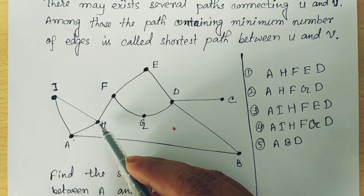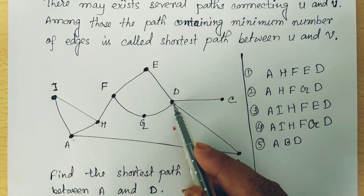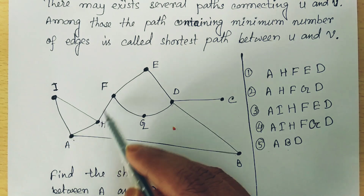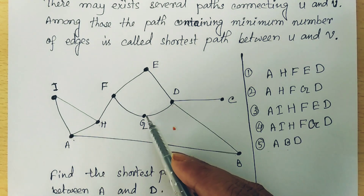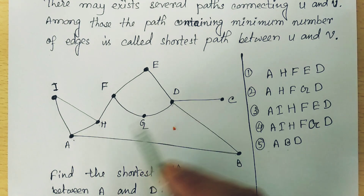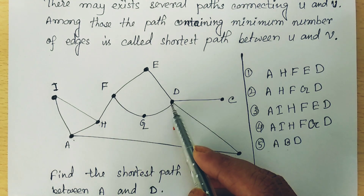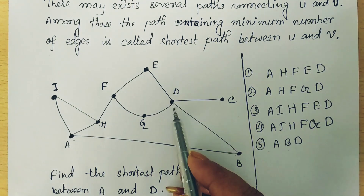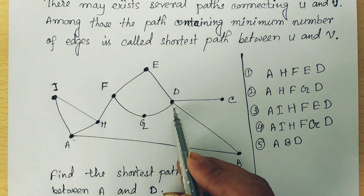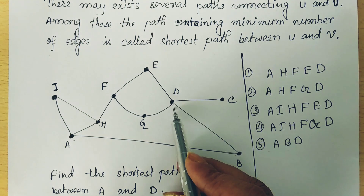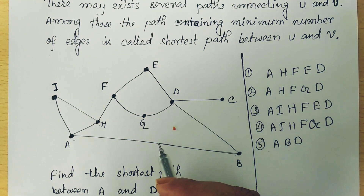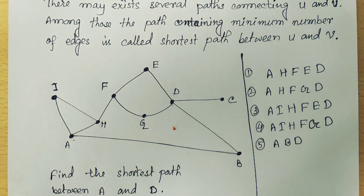Again, A to H, H to F, F to E, E to D is one more path. Again A to H, H to F, F to G, G to D is another one. And A to B, B to D is one more path. So there are many paths between A and D. Among all these paths, which one is the shortest? That is our concern.